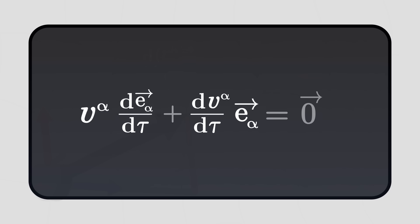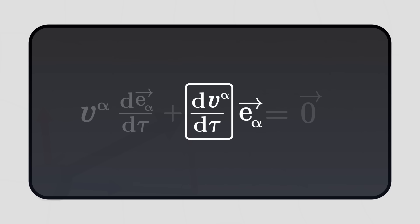we obtain a relation between, on one side, the change in the components of the velocity, and on the other side, the change in the basis vectors themselves.